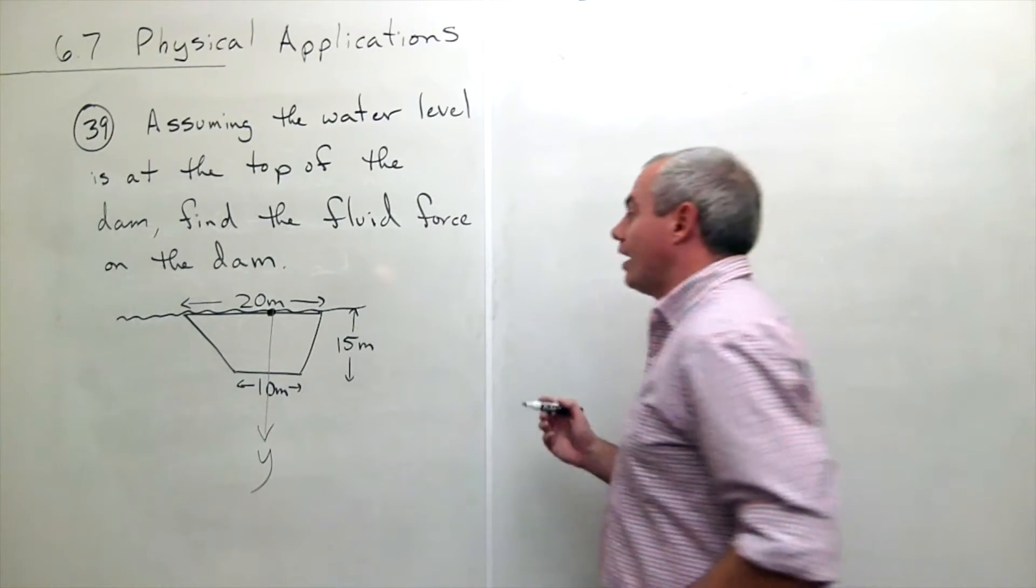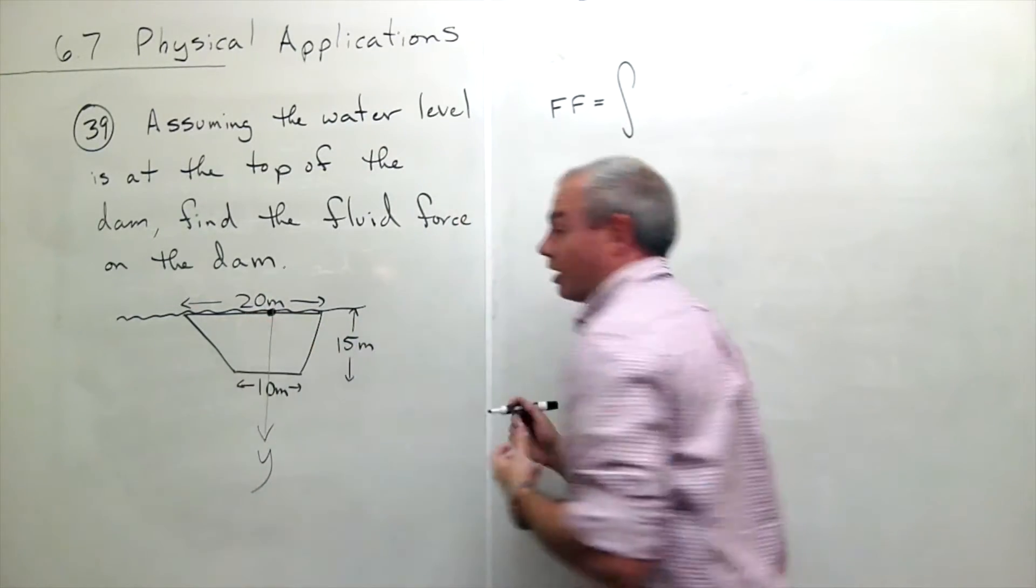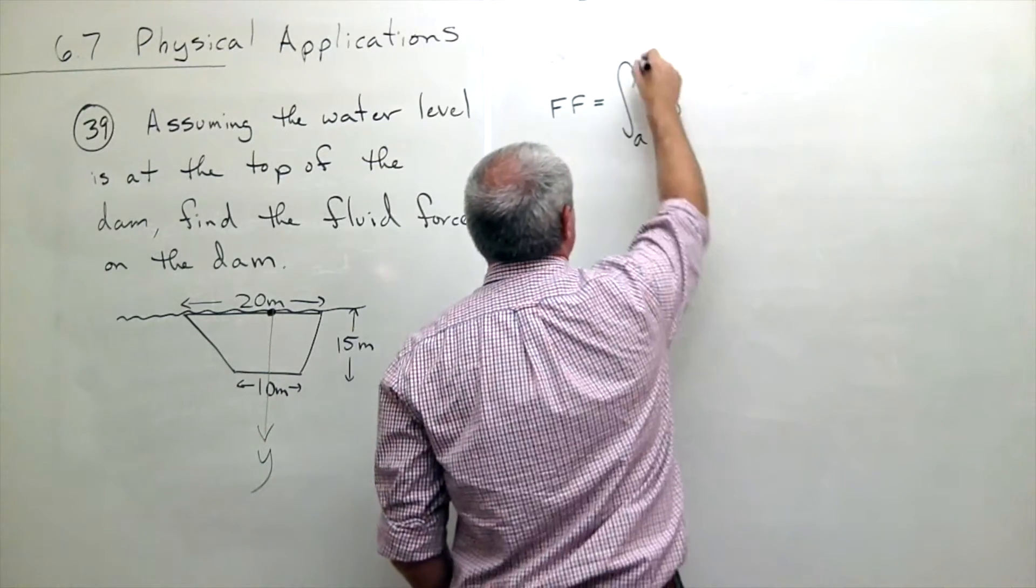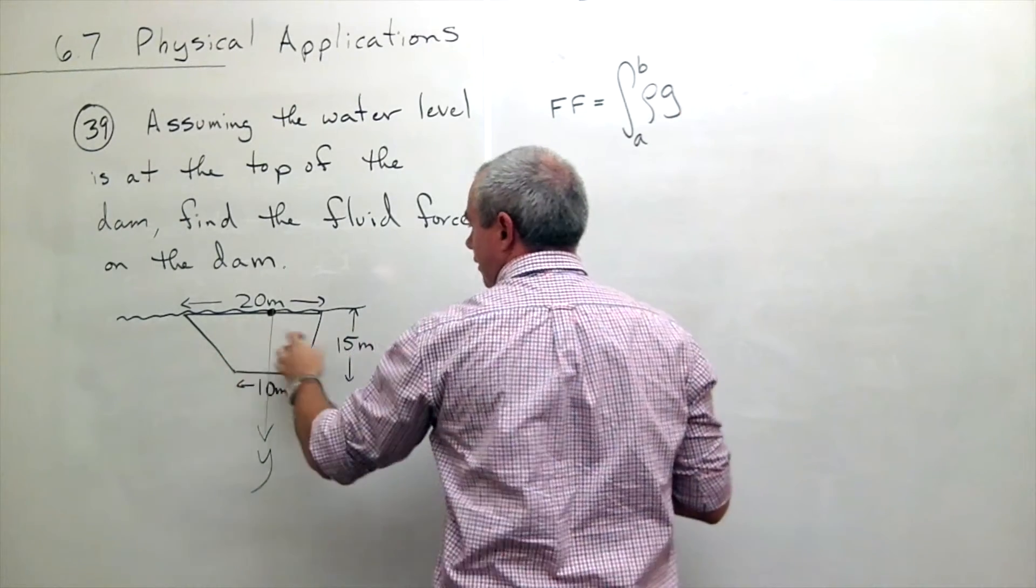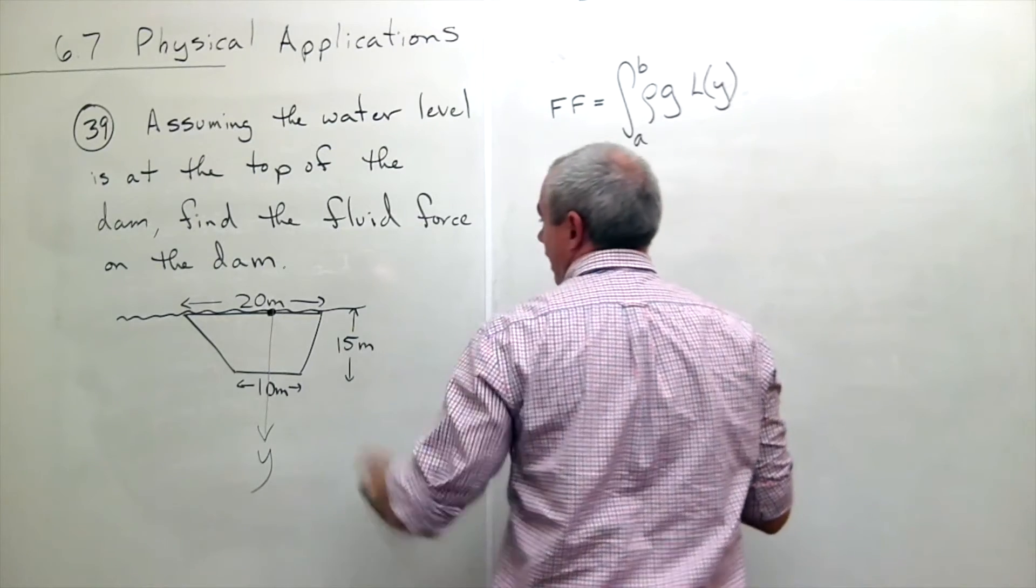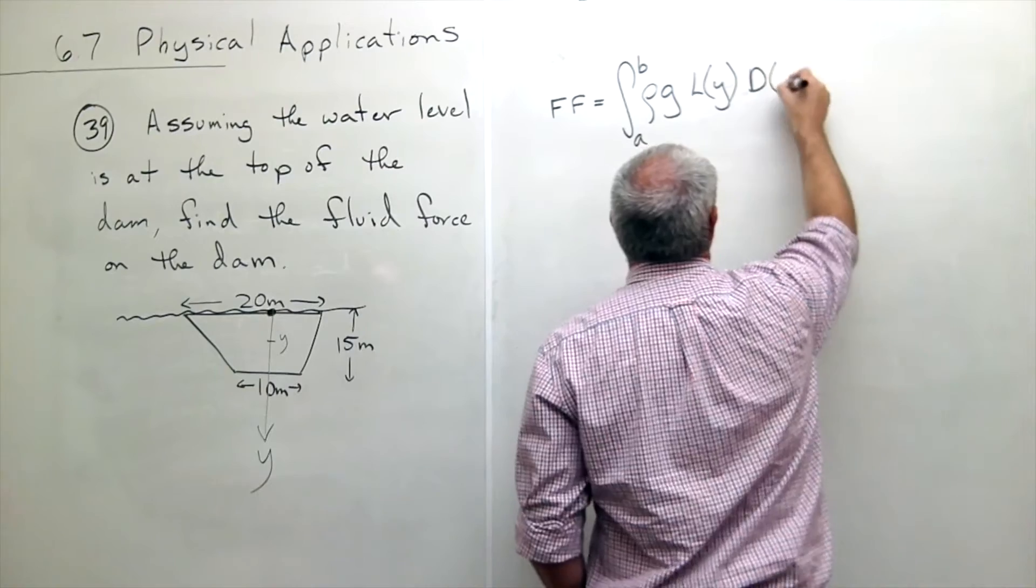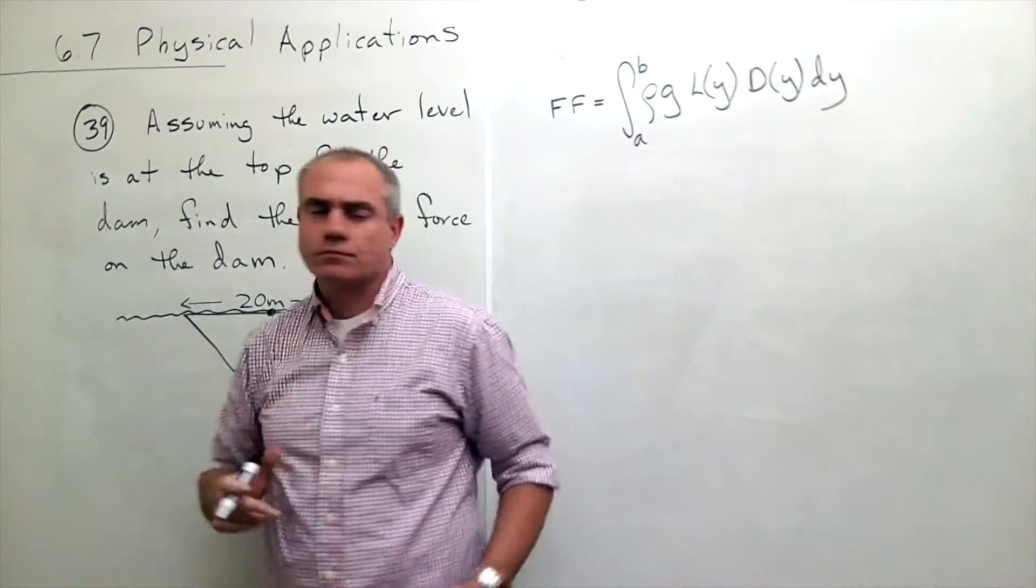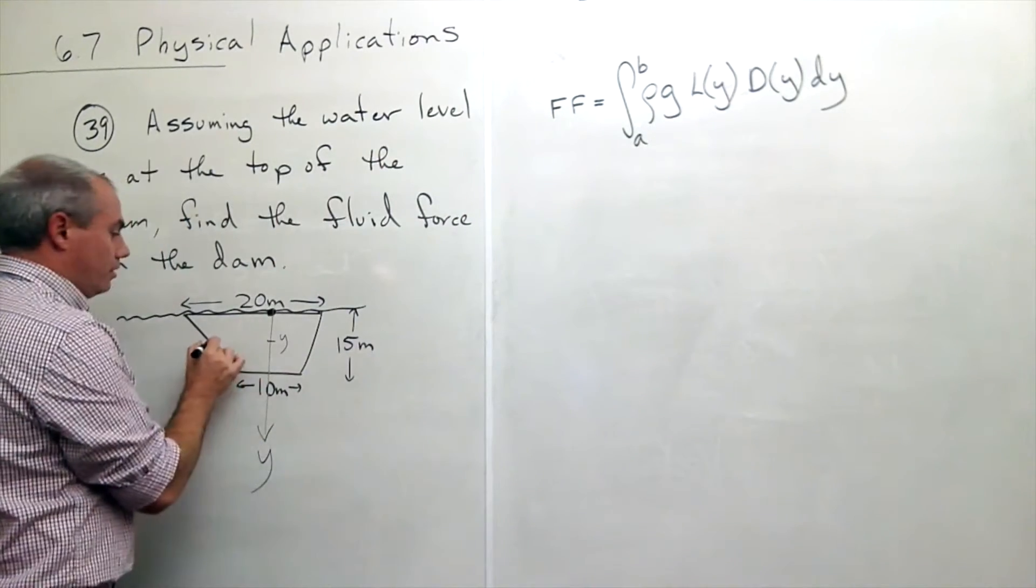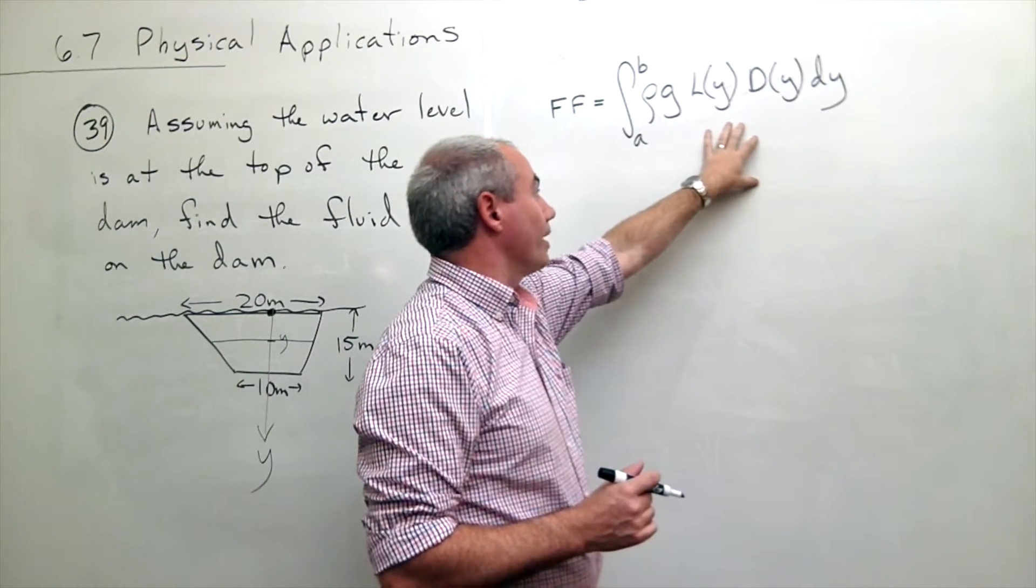Like I said, there are different ways to set up this problem, this is one of them. Now I need to remember what is the equation for fluid force on the side of a dam or on a plate or something of this nature. Well, it is the weight density ρ times g, from a to b times the length of a strip at depth y, so I'm just going to write that as the length at y times the depth d of y dy.